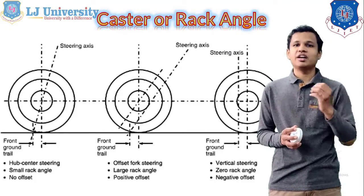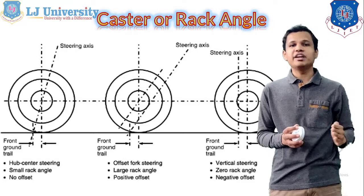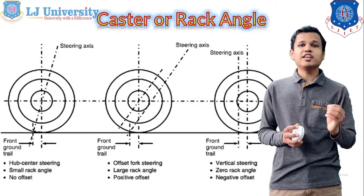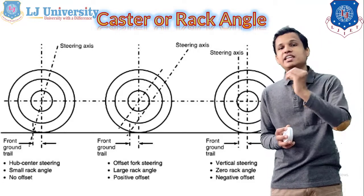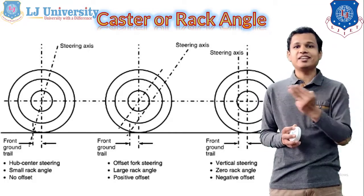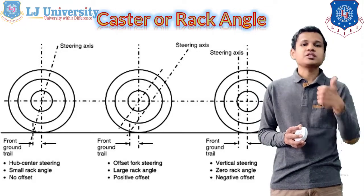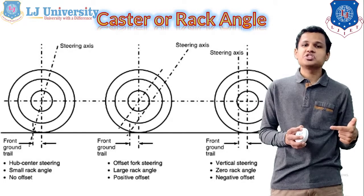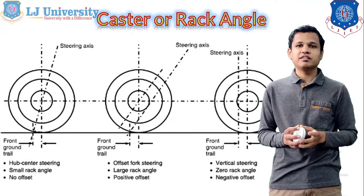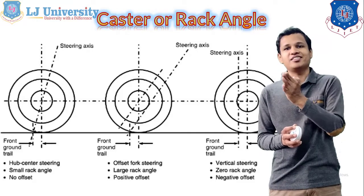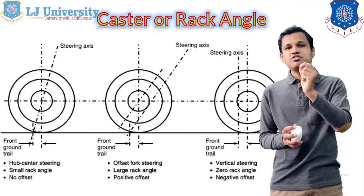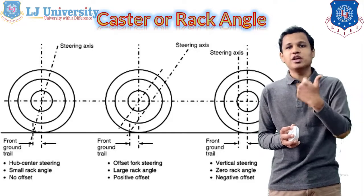The second factor is the caster angle, also called the rack angle. You can see the angle between the steering axis and the vertical line — that is the caster angle. By keeping the value of the trail constant, we can change the values of the caster angle. Three cases are shown. The first is hub center steering, in which the steering axis passes through the center of the hub. In the second case, the offset is given to the steering axis on the rear side, the rack stays constant but the caster angle is more compared to the first case.